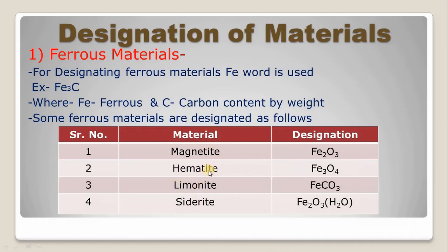Some ferrous materials designated are as follows — examples for designating ferrous materials: Magnetite, Hematite, Limonite, and Siderite. Magnetite is designated Fe2O3, Hematite is designated Fe3O4, Limonite is designated FeCO3, and Siderite is Fe2O3·H2O. In these, Fe is the common word indicating it is a ferrous material, and O indicates oxide. From this, we can say it is a complete ferrous material.